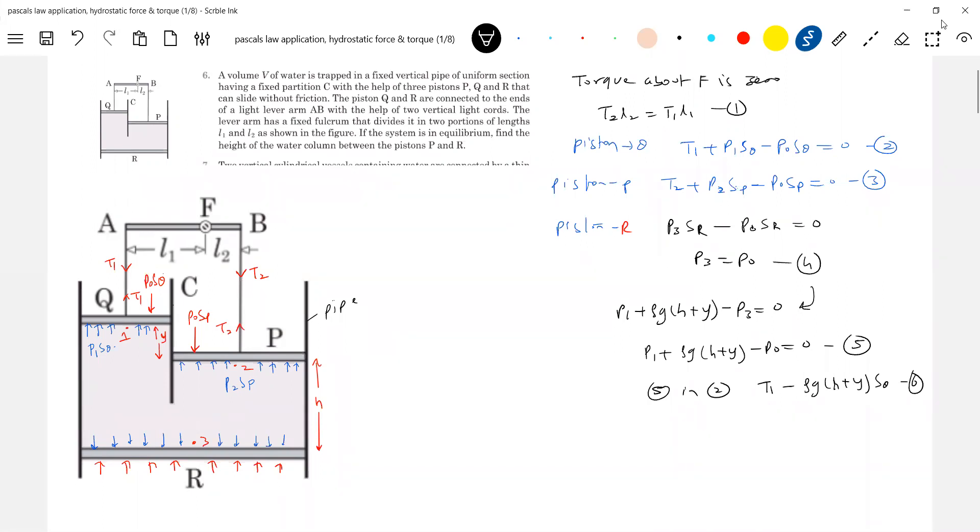Similarly, shall we write the manometric equation from two to three? P2 + ρgh - P3 = 0. Call this equation seven. Putting seven in three will get equation for T2, the tension. Seven in three, so T2 + P2 - P0, so this should be equal to -ρgh·Sp = 0, equation six = 0, equations seven, eight.